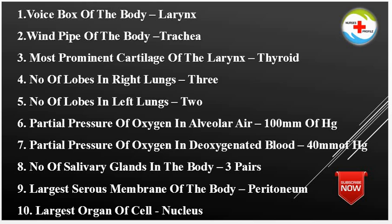Now we will talk about questions one by one. Voice Box of the Body: Larynx. Windpipe of the Body: Trachea. Most Prominent Cartilage of the Larynx: Thyroid. Number of Lobes in Right Lung: 3. Number of Lobes in Left Lung: 2.